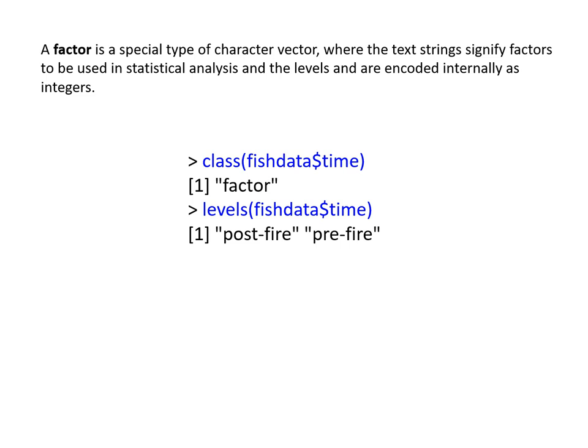A factor is a special kind of character vector — we've talked about factors in ANOVA; same idea. The text string signifies the factors used in a statistical analysis. For example, within fish_data there's a variable called 'time' defined as a factor. When we ask what class it is, it tells us it's a factor. If we ask what levels are associated with fish_data$time, it tells us there are two levels: post-fire and pre-fire.